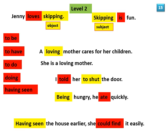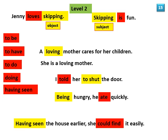These forms can be used in other ways in a sentence — either as a subject or as an object. 'Skipping is fun' — what are we talking about? Skipping. So skipping is the subject of the sentence. 'Jenny loves skipping' — Jenny loves what? Skipping. So skipping is the object of the verb love. 'A loving mother cares for her children' — we are talking about a mother who loves, so loving is used as part of the subject. 'I told her to shut the door' — I told her what? To shut the door. So 'to shut' is used as part of the object, and 'told' is the verb.